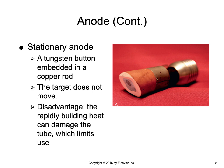Shown here is a stationary anode removed from the glass envelope — you can see the silver-colored tungsten button and the discolored area where electrons interacted with it.